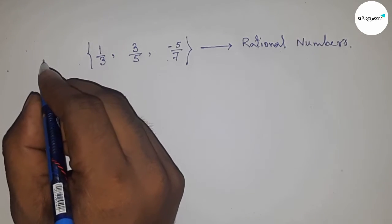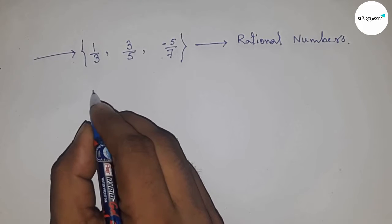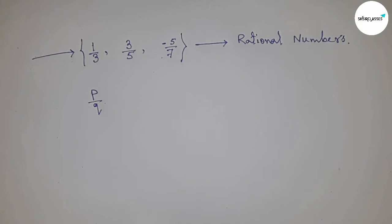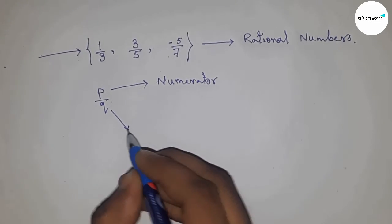The form is p by q, where this is the numerator and this is the denominator. There are some conditions to know.